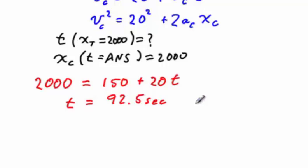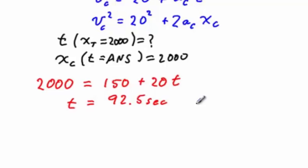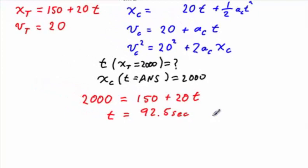We now require that the x of the car be 2,000 under the condition that the time is 92 seconds. Clearly to ensure this, we need to reference the equation that relates the x of the car to time, and that's the first of the three blue equations.